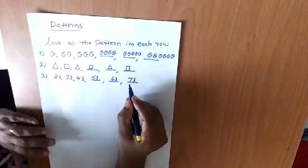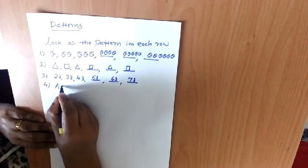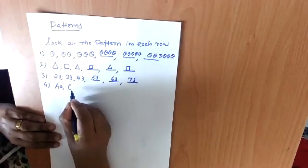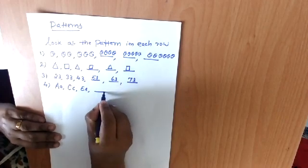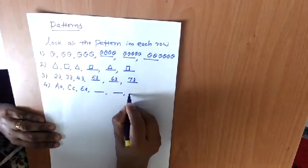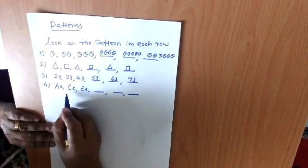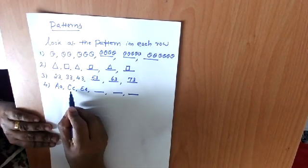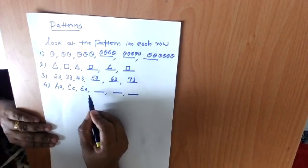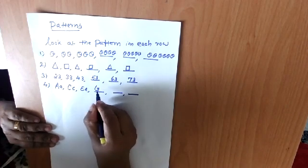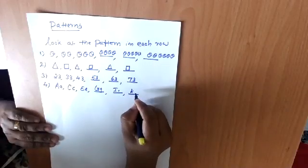Next example. Capital A, small a, capital C, small c — dash, dash, dash, dash. See here, alternate alphabets are used: capital A, small a, capital C, small c, capital E, small e. What will come next? Capital G, small g, capital I, small i, capital K, small k.